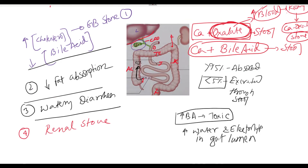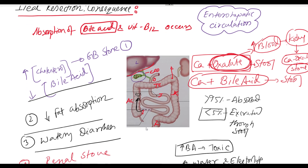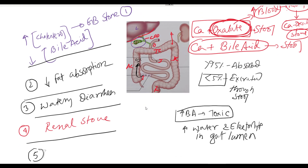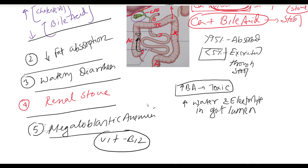Last but not least, consequence number five is the consequence of reduced absorption of vitamin B12 from the terminal ileum. When the absorption of vitamin B12 is decreased, this decreased amount of vitamin B12 will be responsible for megaloblastic anemia, because vitamin B12 is the maturation factor for erythropoiesis.